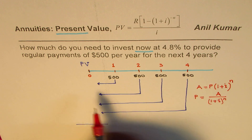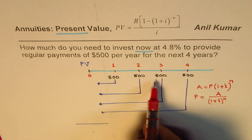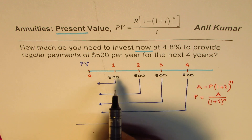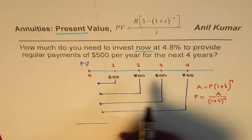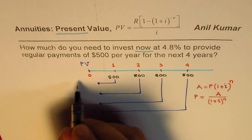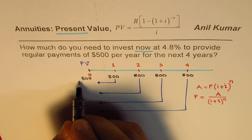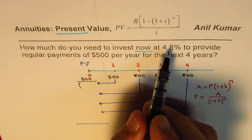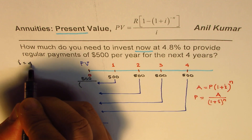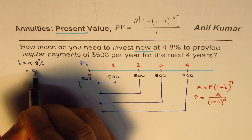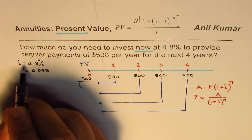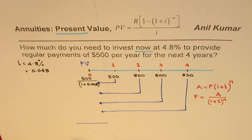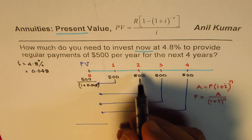Rearranging for P, we get P equals A divided by (1 + i)^n. In annuities we talk about present and future values, so P is present value (PV). Applying this formula, the present value of the $500 received after one year is 500 divided by (1 + 0.048)^1, since the rate i is 4.8 percent, which equals 0.048 in decimals.